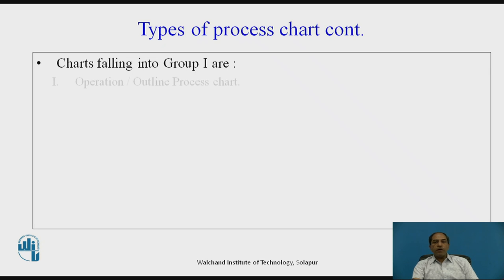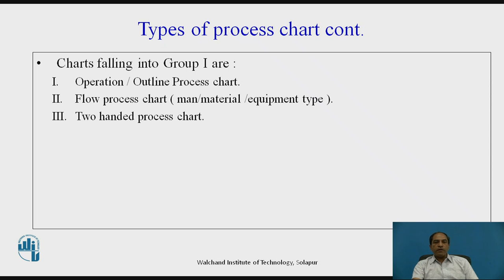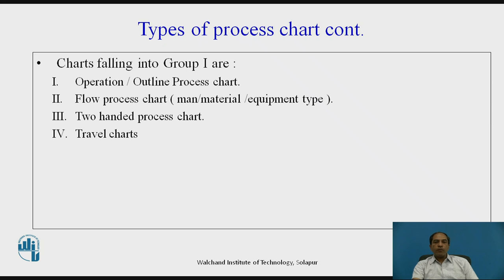Charts without time scale include the outline process chart or operation chart, and the flow process chart which has three types: man type, material type, and equipment type. Man type tracks the flow of the person; material type focuses on material movement; equipment type studies utilization of a jig, fixture, or attachment to optimize equipment utilization. The two-handed process chart is mainly used for small electronic items and assemblies where both hands are used simultaneously. The travel chart is mainly used for material handling movements.